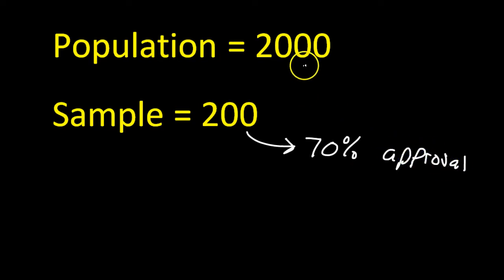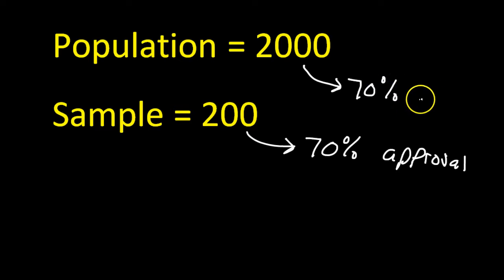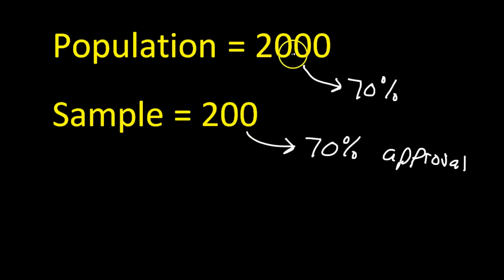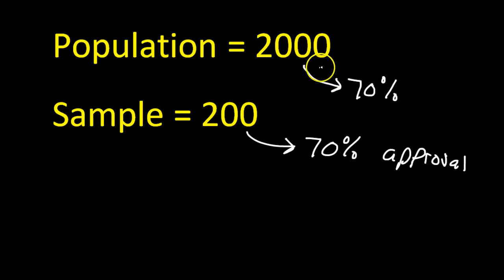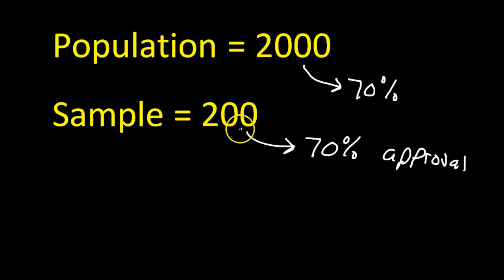I'm hoping that if I asked every single student in the population, all 2,000, that would also turn out to be 70%. In other words, I'm hoping that the sample well represents the population, so that the percentage of students that feel a certain way in the sample will match the percentage in the population. The reality is there's going to be some difference between these two numbers, usually. The more difference there is, the more bias you're looking at.